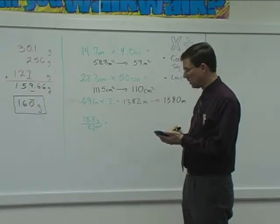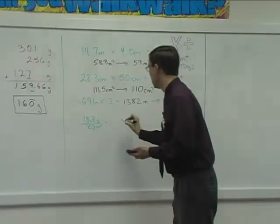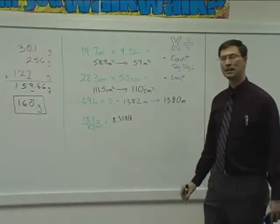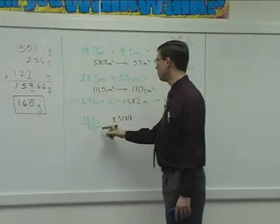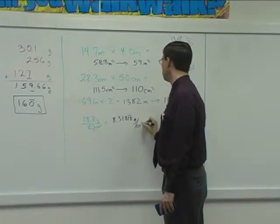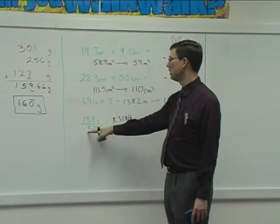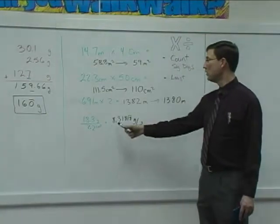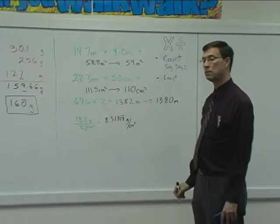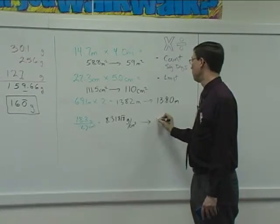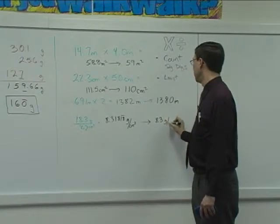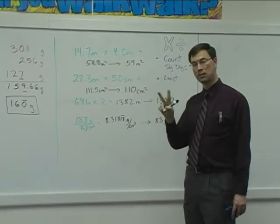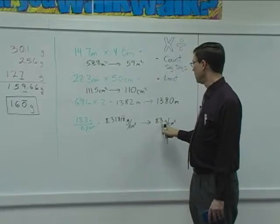18.3 divided by 2.2. We get 8.31818. And that just keeps repeating. And that's going to be grams over centimeters cubed. How many significant digits in this first one? Three. The one we're dividing by? Two. So how many can I have in the answer? Michael? I can only have two. So round this off to two significant figures. What would it be? Eight point three. Grams over cubic centimeters. It's not to two decimal places. It's two significant figures. So here's one. Here's the second one. And we're done.